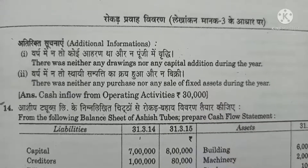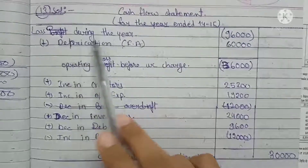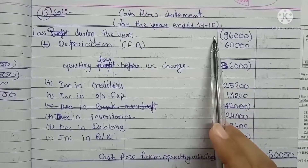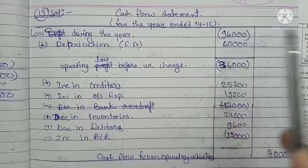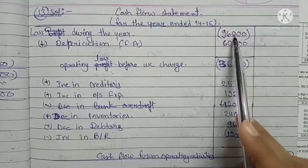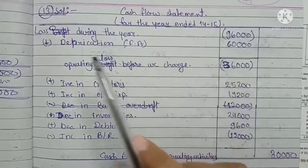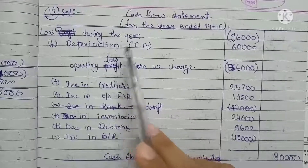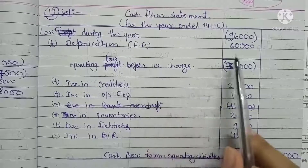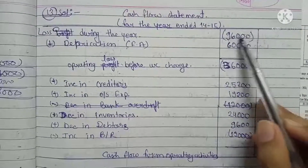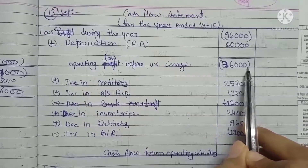We will calculate the cash flow statement for the year 2014-15. The difference between opening and closing capital was Rs. 96,000. Since the opening year capital is higher than closing year, this represents a loss of Rs. 96,000. We will add back depreciation, as fixed assets were reduced between the two years. After adjusting depreciation, the loss comes to Rs. 36,000, which is the operating loss before working capital changes.